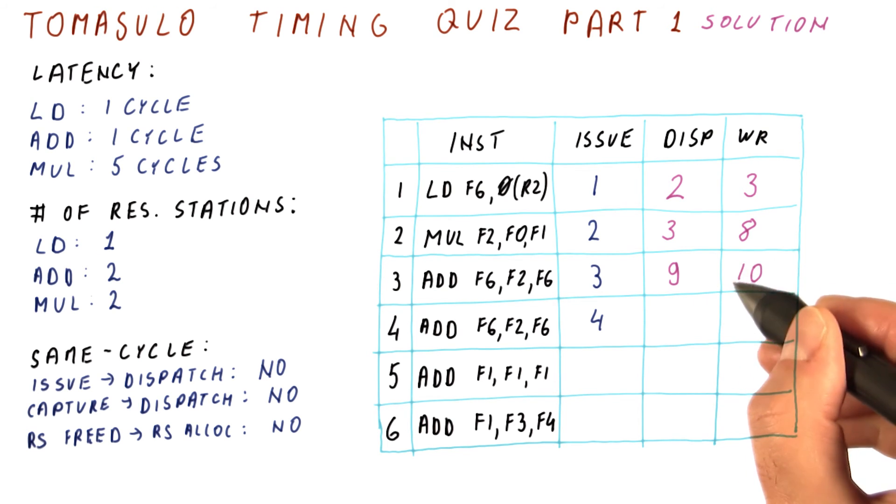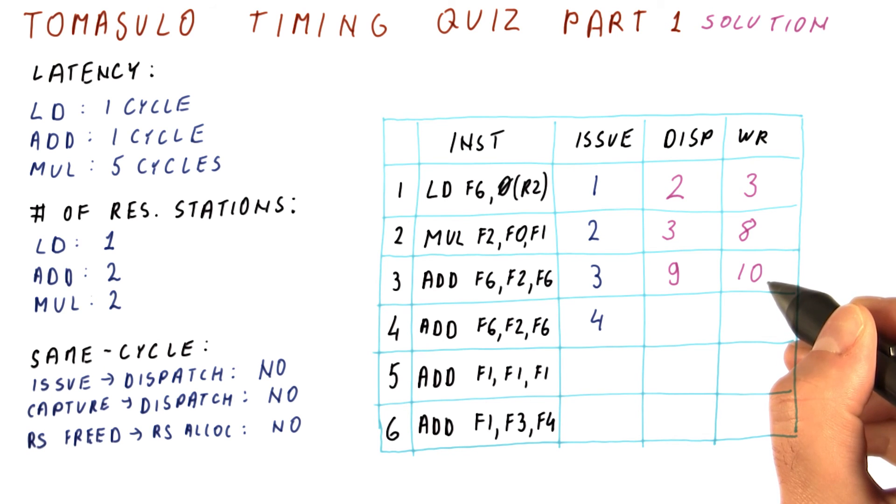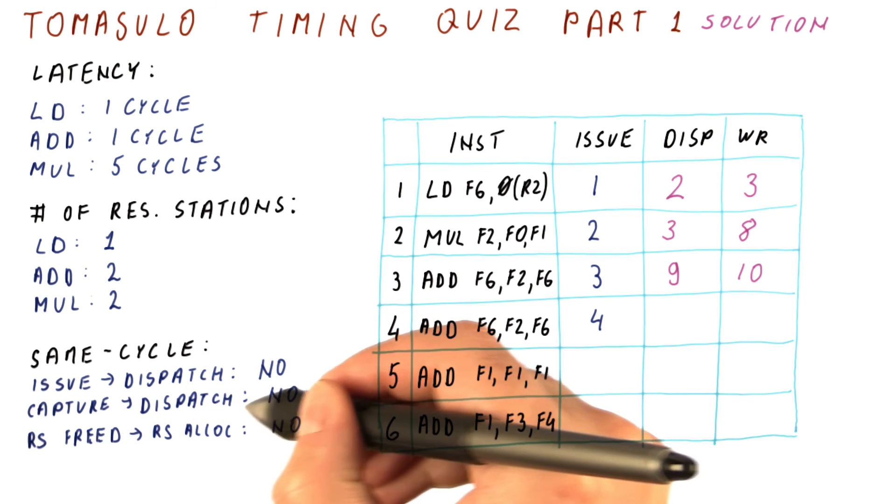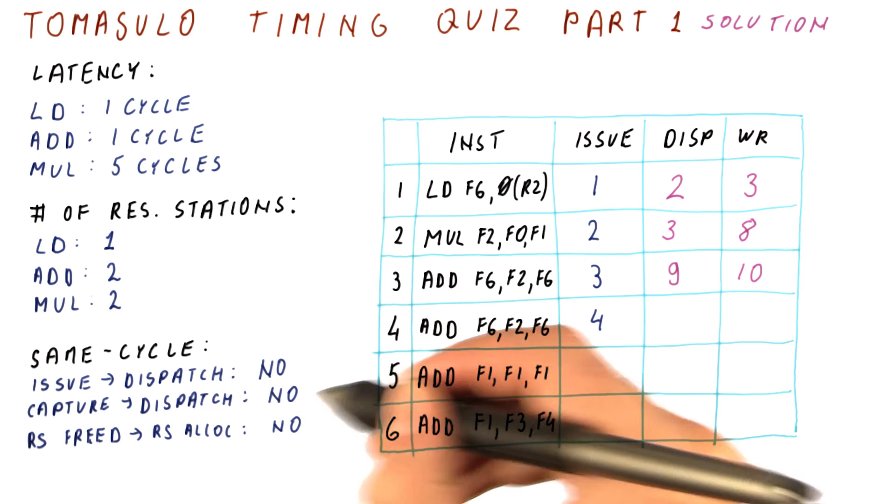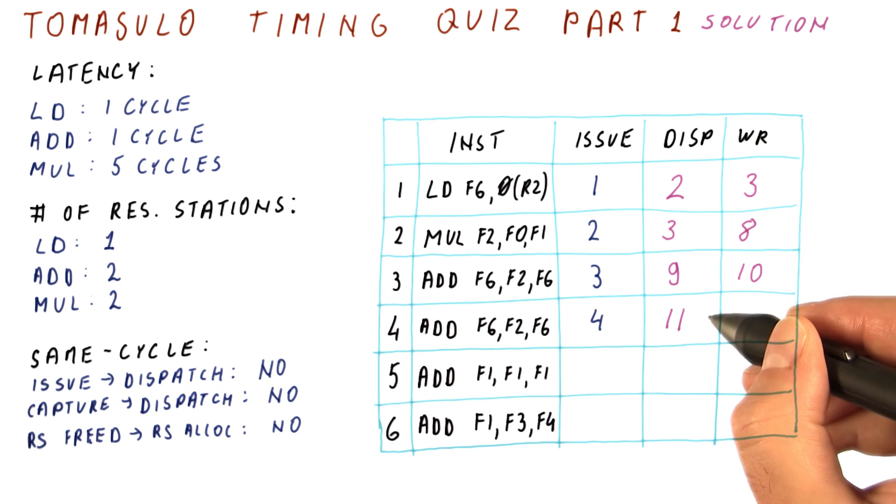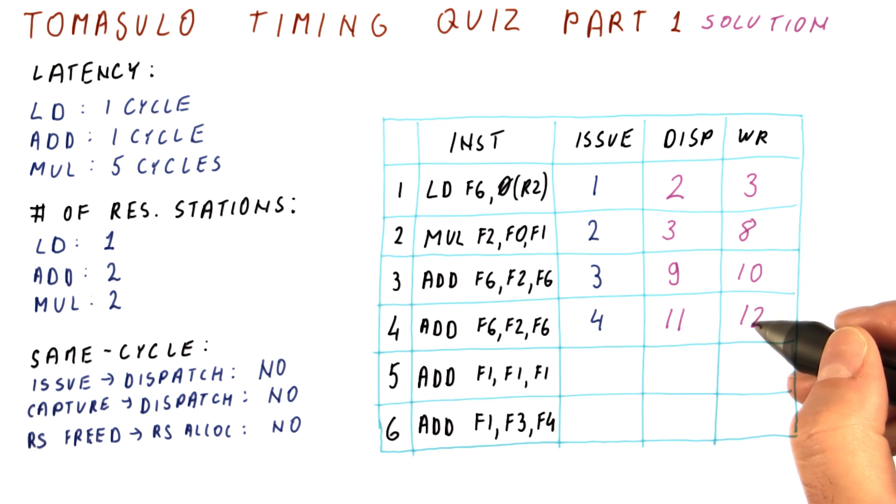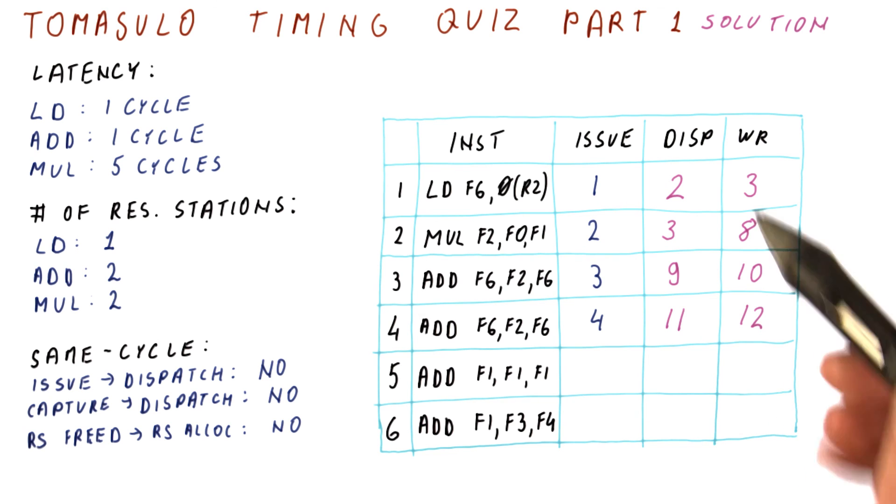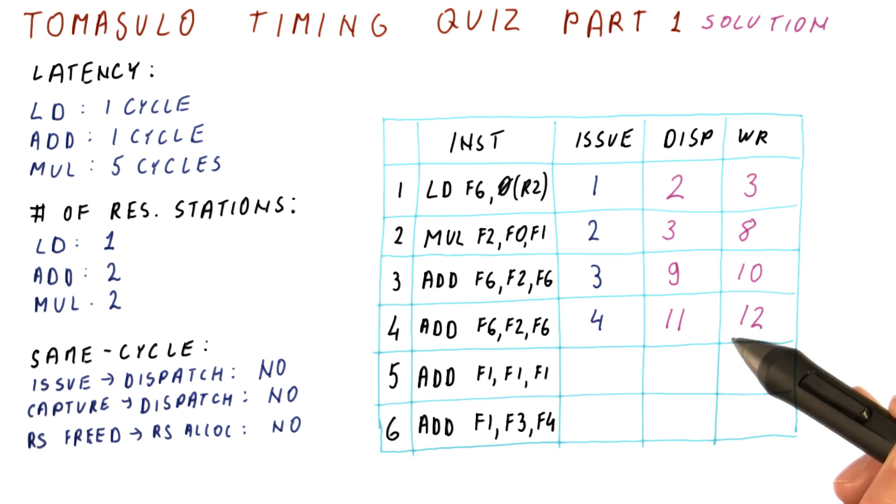So in cycle ten, this instruction captures its last missing operand, which is F6. It cannot dispatch in that same cycle, so it dispatches in cycle eleven and finishes in cycle twelve. And this completes the first part of the quiz.